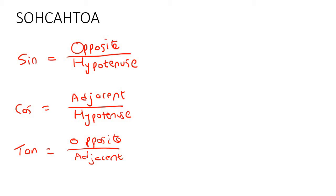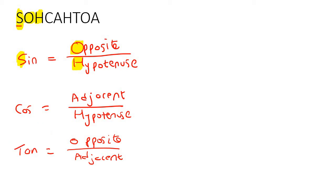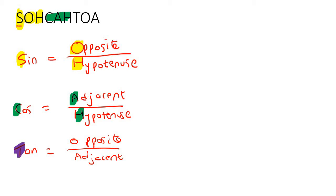So you can see how I got that. For sin, there's the S, the O, and the H — S-O-H. Then for cos it's C-A-H. And then for tan there's T-O-A. That's where I'm getting those from.